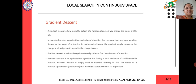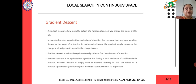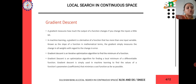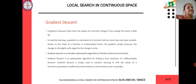Gradient descent measures how much the output of a function changes if you change the input even a very little bit. In machine learning, a gradient is a derivative of a function that has more than one input variable — you can form a slope based on it. It is an iterative process and an optimization algorithm for finding a local minimum of a differentiable function.